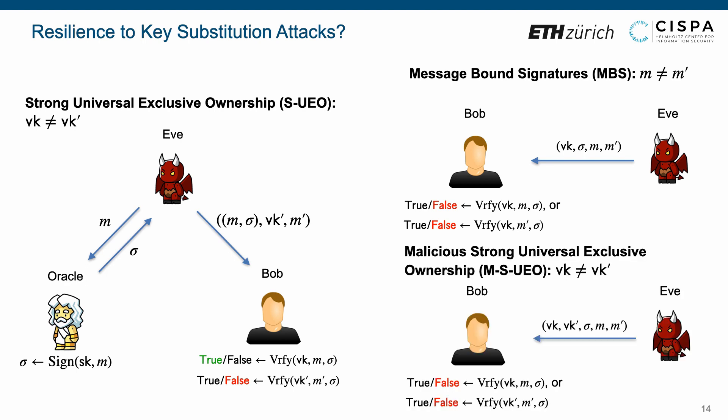Finally, the malicious strong universal exclusive ownership ensures that no adversary can forge two distinct verification keys, vk and vk', a signature sigma, two messages m and m', such that the verification on (vk, m, sigma) and on (vk', m', sigma) both hold.